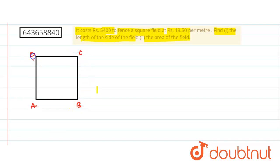We have to fence this border, this square field, and total cost required is 5400 at the rate of 13.50. We just find out the perimeter of this square field. Perimeter means AB plus BC plus DC plus AD.